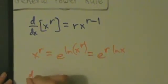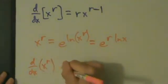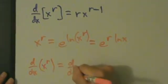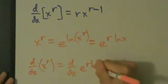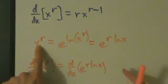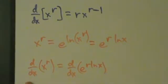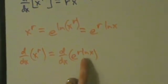So now d/dx of x^r equals d/dx of e^(r*ln(x)), right? Because x^r equals e^(r*ln(x)), therefore their derivatives have to be equal. Okay, and we know how to take the derivative of this, right? This is just going to be a straightforward chain rule.